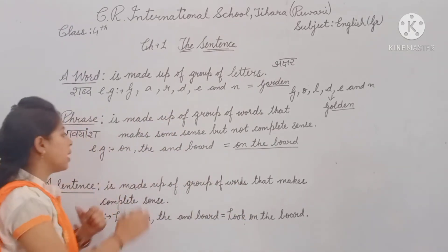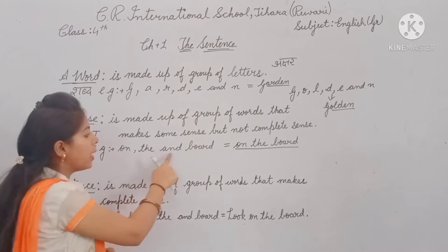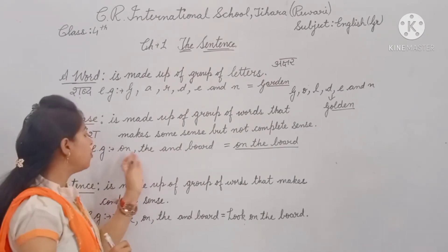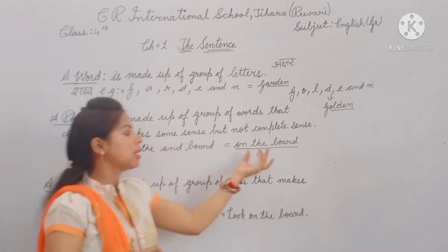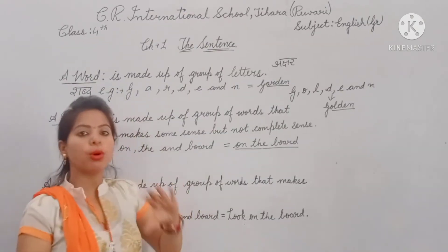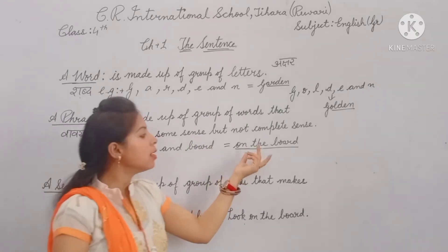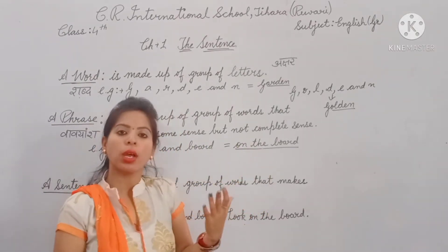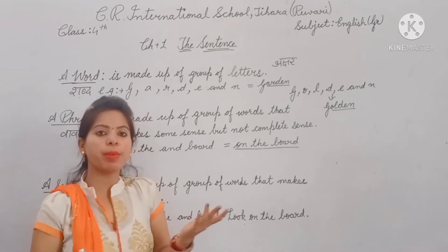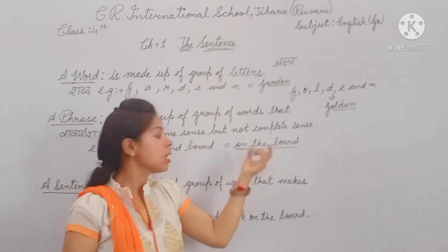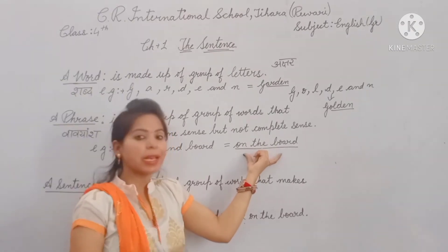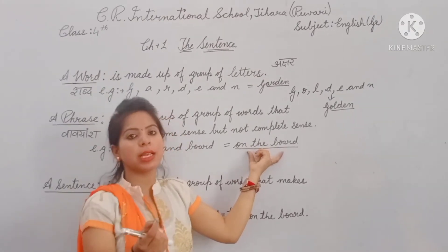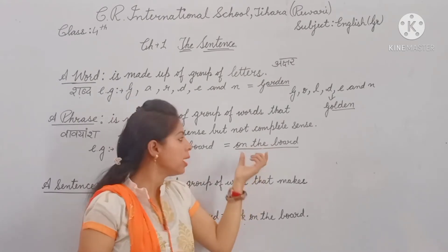For example, 'on,' 'the,' and 'board' — 'on the board' are three words. This is a phrase. A phrase is a group of words that makes some sense but does not give a complete meaning. So a group of words combined forms a phrase.